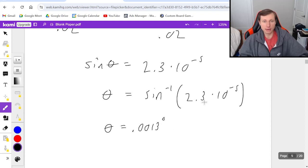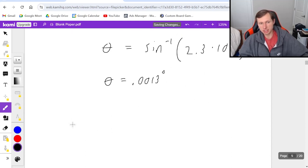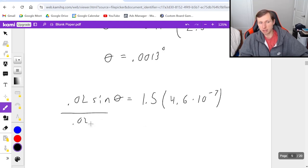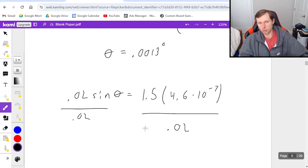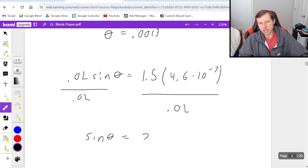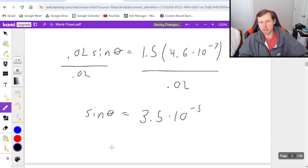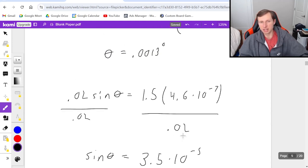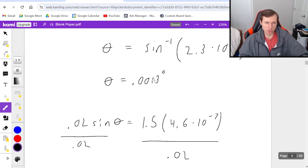Now I do the same thing with m = 1.5. Dividing 0.02 on both sides: sin θ = 3.5 × 10^-5. Taking the inverse sine: θ = 0.00198 degrees.